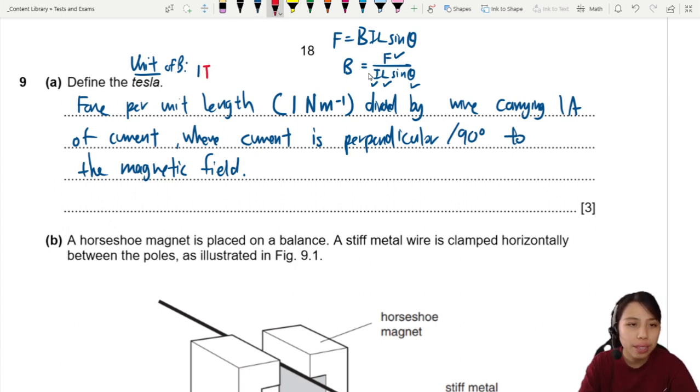So marks here. First one is force per unit length. That's one. Per unit ampere. Look for dividing per ampere. Divided by one amp of current. That's one here.